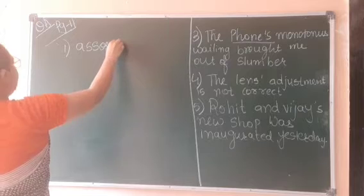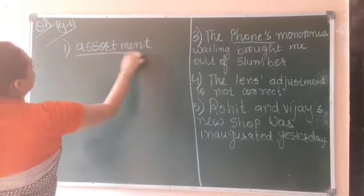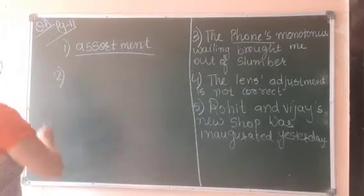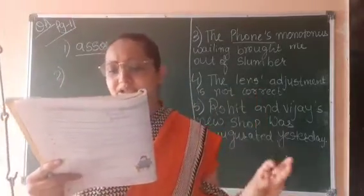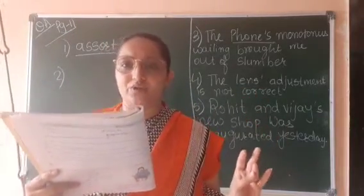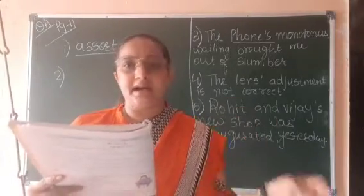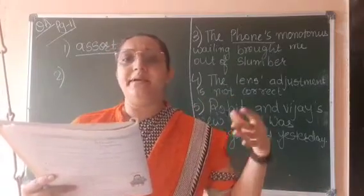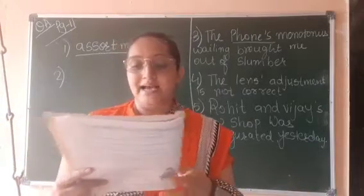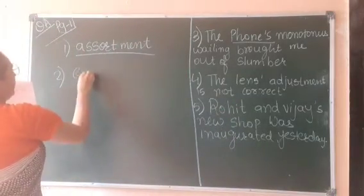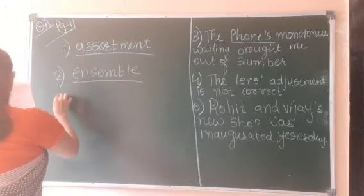First one: a dash is a collection of various things — collection of pictures, stamps, old coins, or paintings. When we talk about a collection of various things, we use the collective noun 'assortment.' For example: an assortment of paintings. Second: a dash is a group of musicians, singers, dancers, or actors who perform together. When they are in a group, they are known as an 'ensemble.'